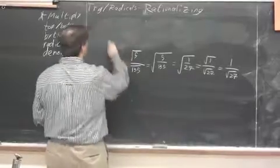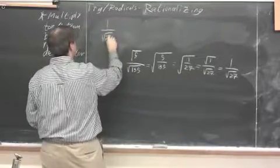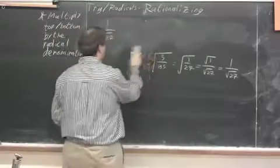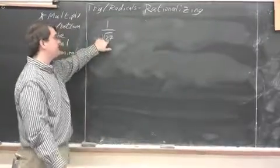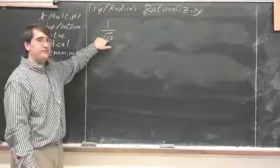So, we wound up at 1 over radical 27. So, the question is, what happens here? Because hopefully, you see radical 27, and you know that that's something that can simplify.